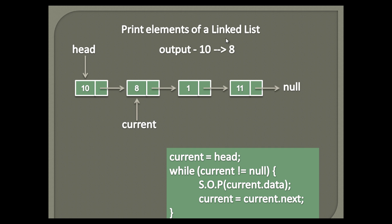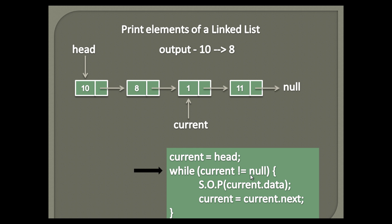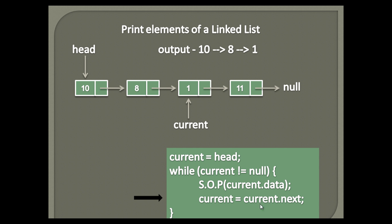Output now becomes 10 and 8, and current node now points to the third node. Similarly, now again it checks the while loop condition. Current node points to the third node, which is not null. Therefore it again executes statements in the while loop as demonstrated. Output now becomes 10, 8, and 1.